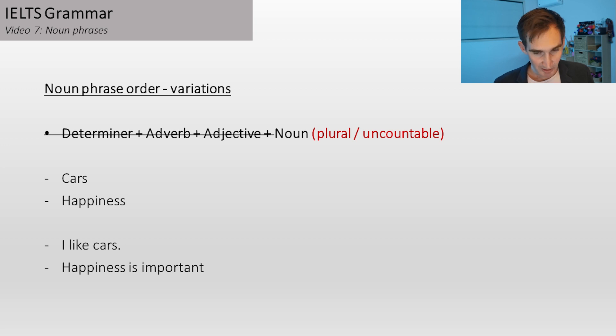So cars is an example of, of course, a plural noun. Happiness, an example of an uncountable noun. So these words can be on their own. They don't need other words every time. In a sentence, I like cars, alone.